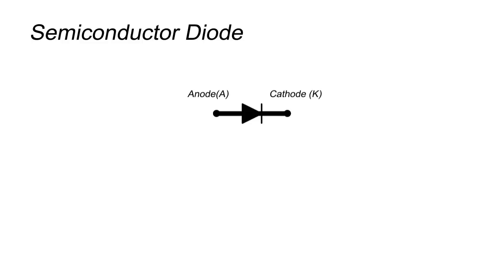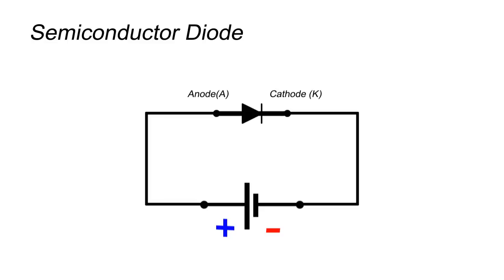This device has a special property that it only conducts electricity when it is forward biased. Forward biased means when anode is at higher potential or positive polarity and cathode is at lower potential or negative polarity. In this case, the diode offers very low resistance to a circuit or behaves like a closed switch.